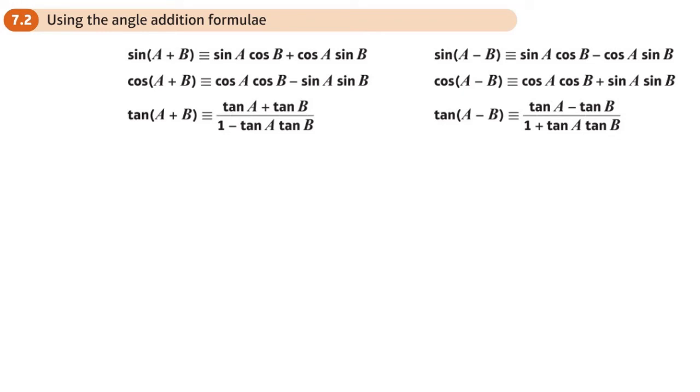This is the second section on the Year 2 book, Pure Year 2 book, Chapter 7, which is trigonometry and modeling. We're just going to be using the addition angle formula. We've already proved that they're true and done some simple applications where we've proved some identities. Now we're going to be using these to help us solve some simple problems.